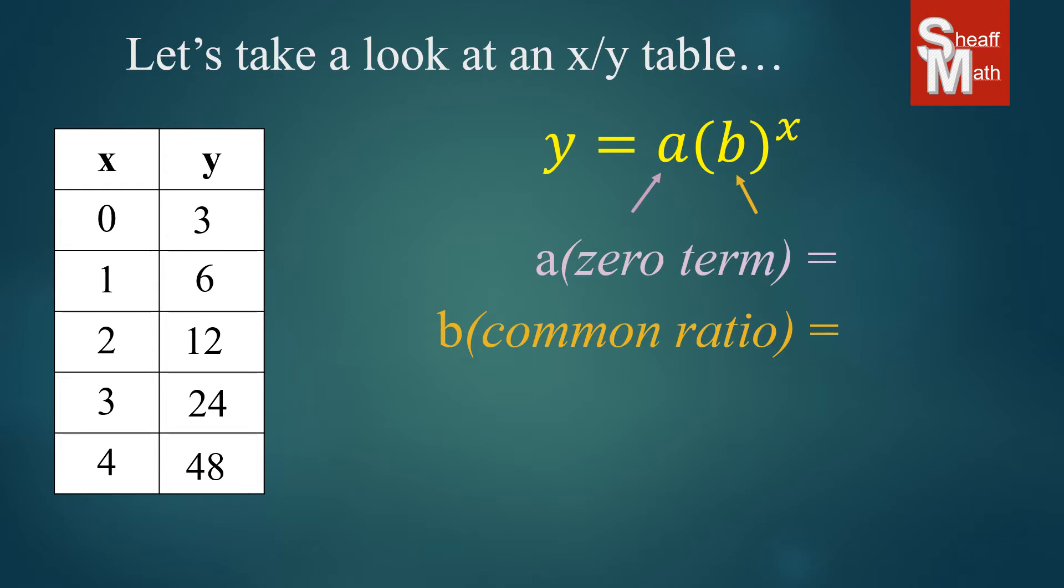The first thing we're going to do is easily identify the zero term. When x is zero, whatever y is, that is our y-intercept. And so we found our zero term.